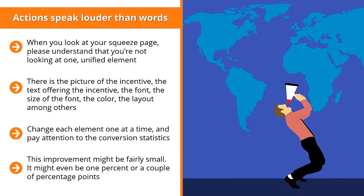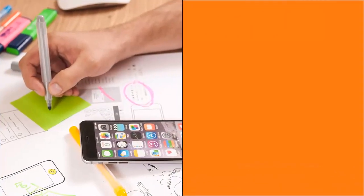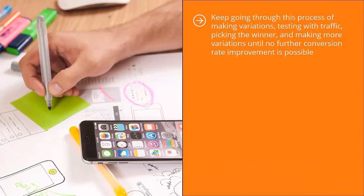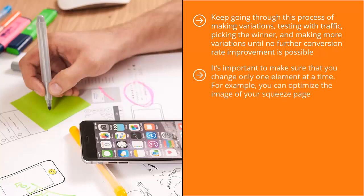Isolate that winning variation and make more variations of it. Run traffic through all the variations and see if you can improve your conversion rate. Keep going through this process of making variations, testing with traffic, picking the winner, and making more variations until no further improvement is possible. At that point, move on to optimizing another element. Make sure you change only one element at a time — for example, optimize the image first, and once it can't improve further, then start changing the text.